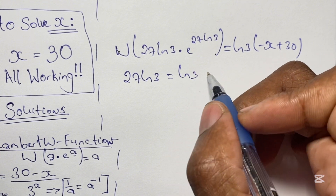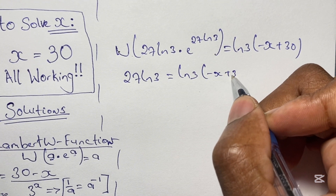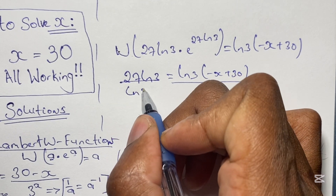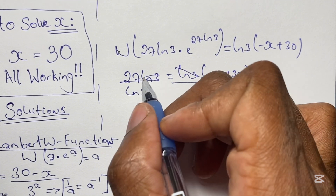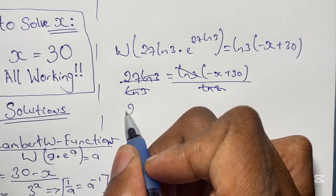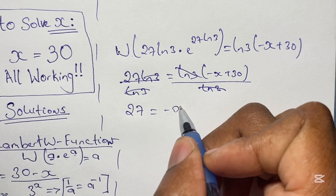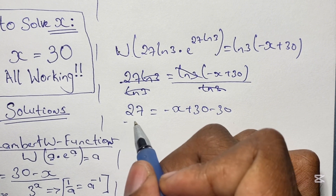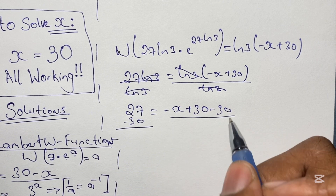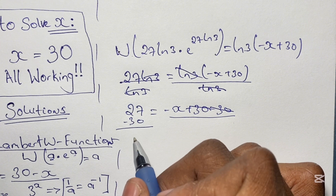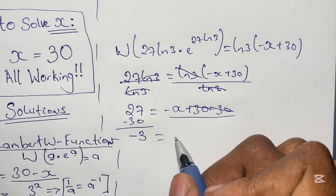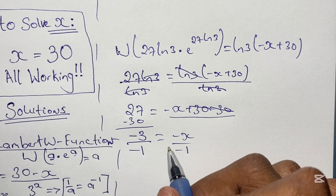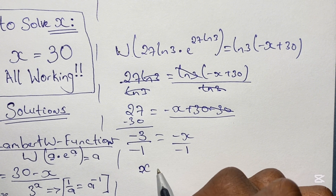From here we solve for x by dividing both sides by ln 3. The ln 3 terms cancel, leaving us with 27 equals negative x plus 30. Subtracting 30 from both sides: 27 minus 30 equals negative x, giving us negative 3 equals negative x. Dividing both sides by negative 1, we find that x is therefore equal to 3.